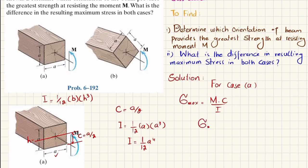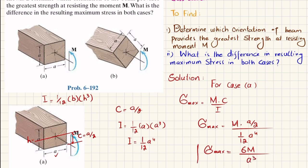Putting all values into the formula: maximum bending stress for case A equals M times C divided by I, where C = A/2 and I = (1/12)A⁴. When you calculate this, the maximum bending stress comes out to be 6M divided by A³. This is the maximum bending stress for case A.